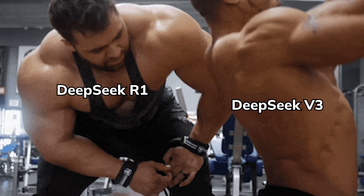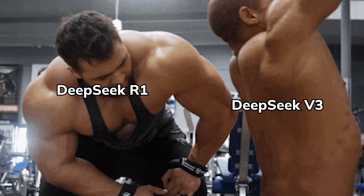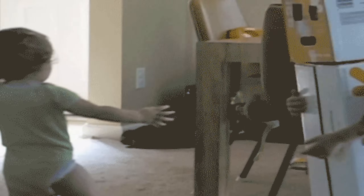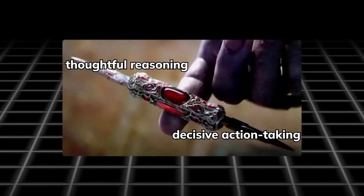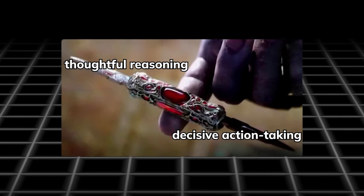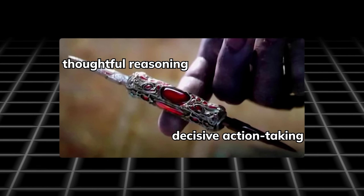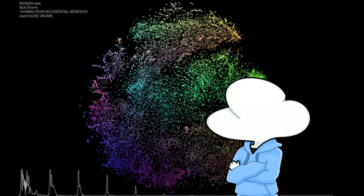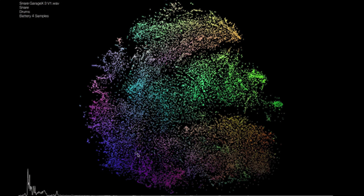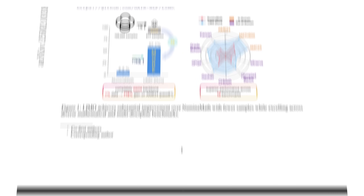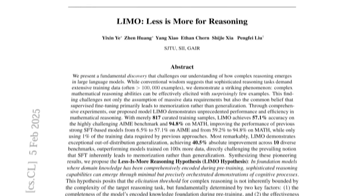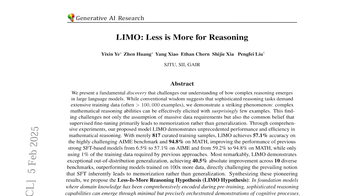The second is selective reinforcement learning. Since most models aren't as powerful as DeepSeek R1 or V3, we cannot have them rely on themselves to discover effective reasoning. So in the process of reinforcement learning, there needs to be a good balance of thoughtful reasoning with decisive action taking. Which brings us to the third point: there needs to be good data selection for models to learn from. And this perfectly introduces the next paper — "Less is More for Reasoning."